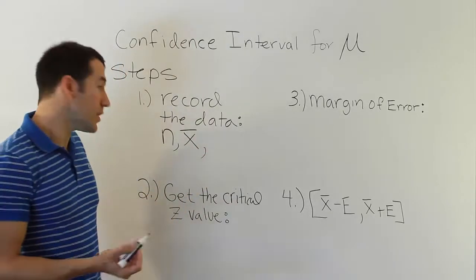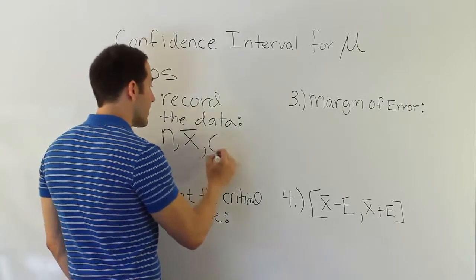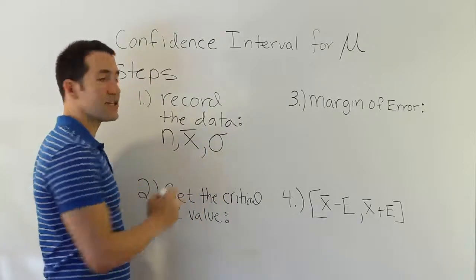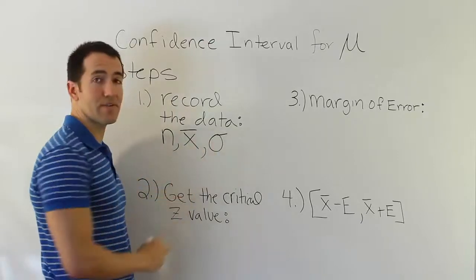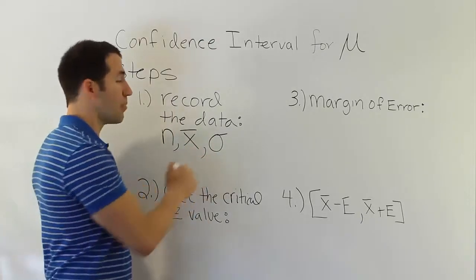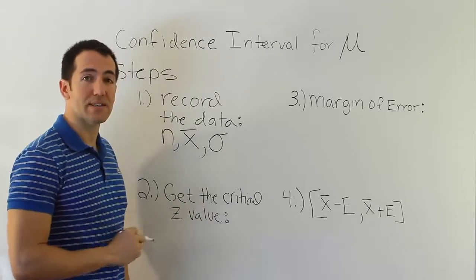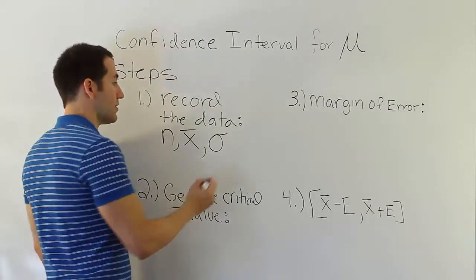Then we will need a standard deviation of some sort. Typically the formula says we need the population standard deviation σ, but we hardly ever actually have that in reality. So what we'll say is if we could get the population value, great, but typically we'll use s as a substitute, the sample standard deviation.